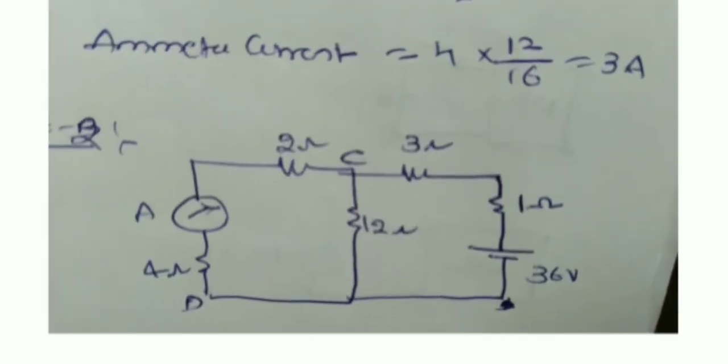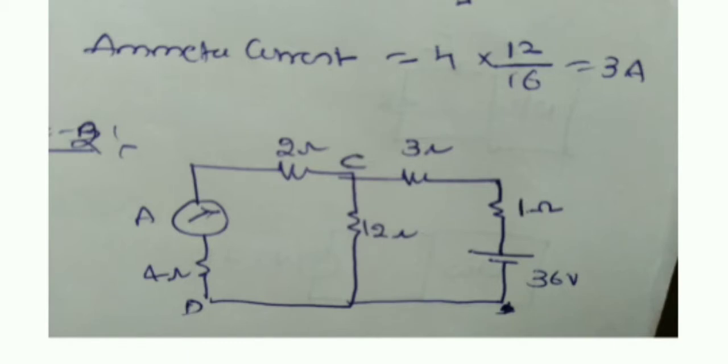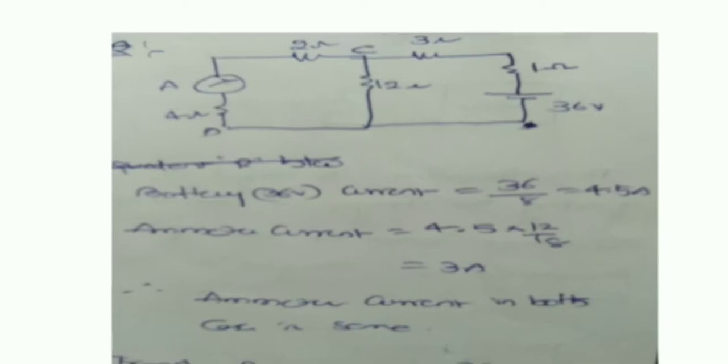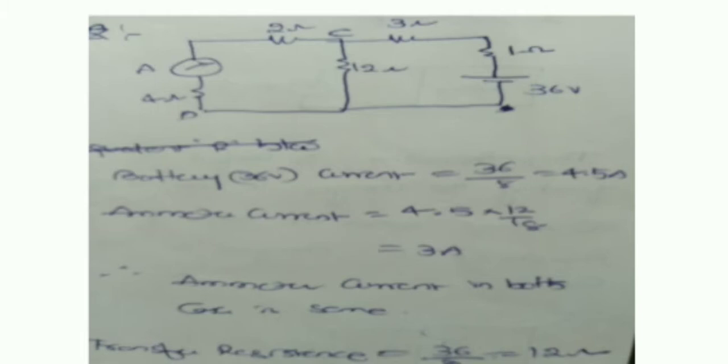First, calculate the total current. The battery current equals total voltage divided by total resistance: 36 divided by 9 equals 4 amperes. The ammeter current, by current division, is 4 × 12 divided by 16, which equals 3 amperes. In case 2, replace the voltage source, find the total current: 36 divided by 8 equals 4.5 amperes, and the ammeter current by current division is again 3 amperes. In both cases the ratio is the same, and the transfer impedance is 36 divided by 3 equals 12 ohms.